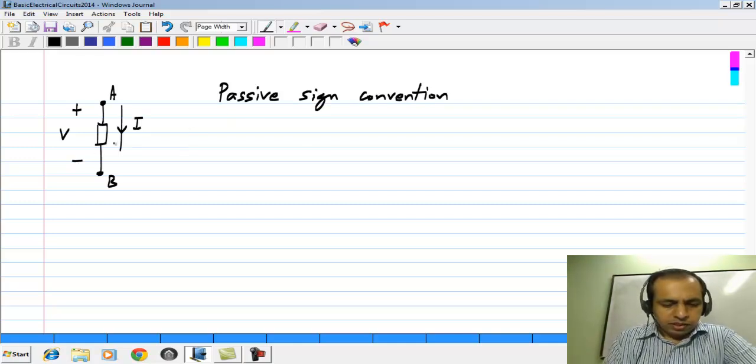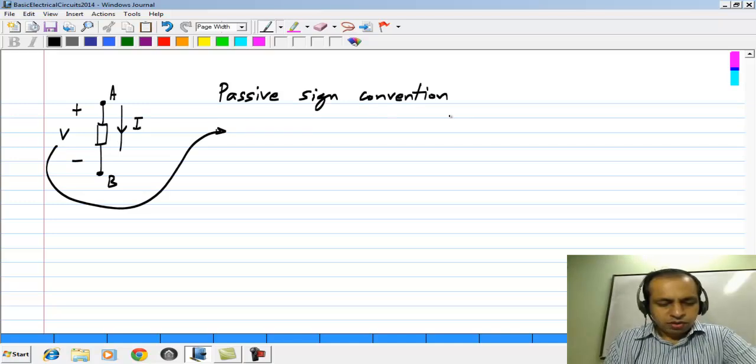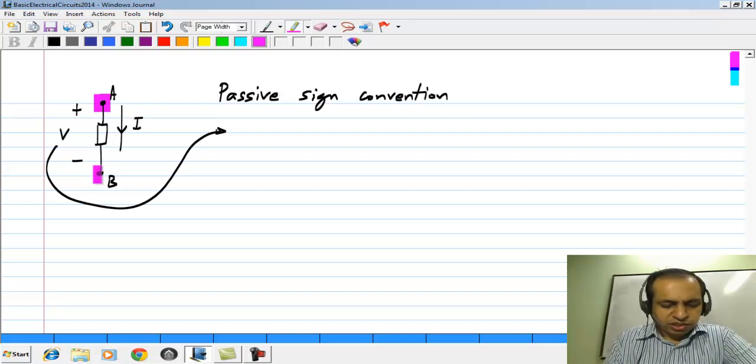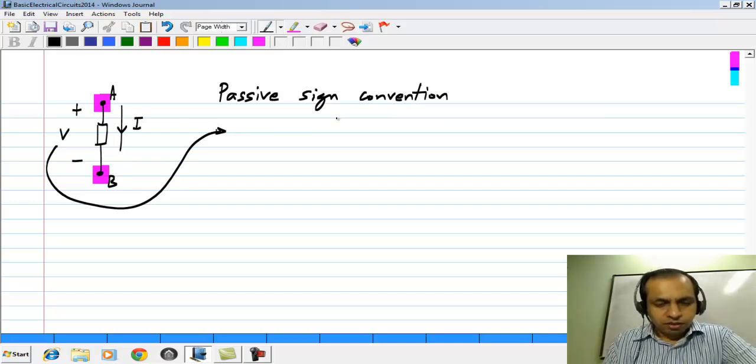What it means is that we define the voltage with some polarity, say we choose A to be positive and B to be negative. Of course, this does not mean that the voltage is positive this way, this is the way we define the voltage.